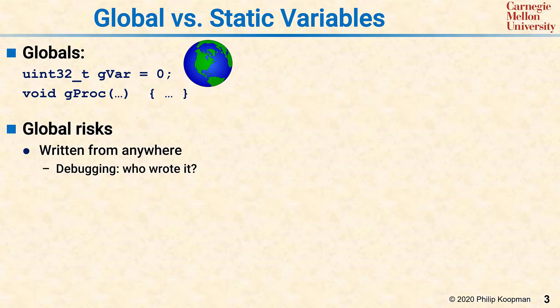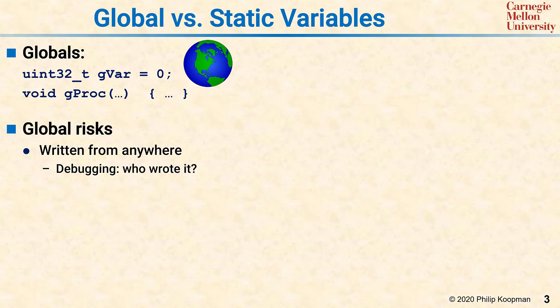Global variables have significant risks. They can be written from anywhere in your system, with multiple writers being even worse than a single writer. When you are debugging, it is common to have a problem with globals in that you cannot tell which module actually wrote an erroneous value. Globals can also be read from anywhere. That means that if you change the behavior of a procedure writing a value, it can take a lot of work to track down all the places other procedures read that value, and can cause all sorts of bugs in unexpected places.